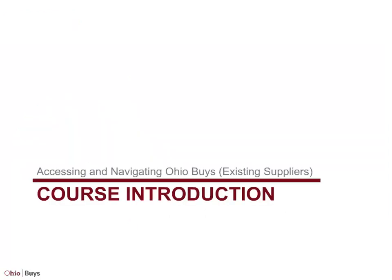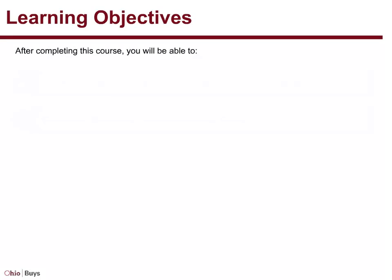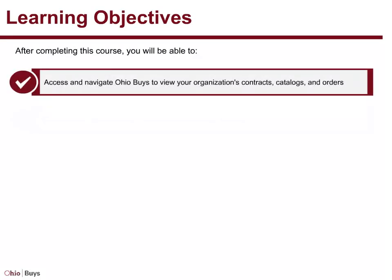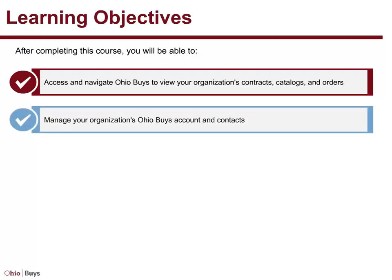Course Introduction. After completing this course, you will be able to access and navigate Ohio Buys to view your organization's contracts, catalogs, and orders, and manage your organization's OhioBuys account and contacts.